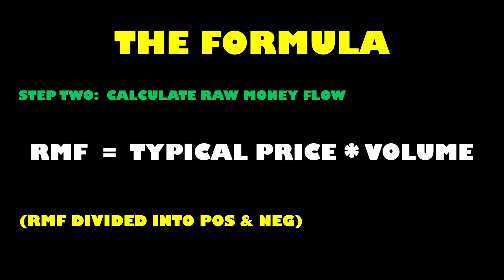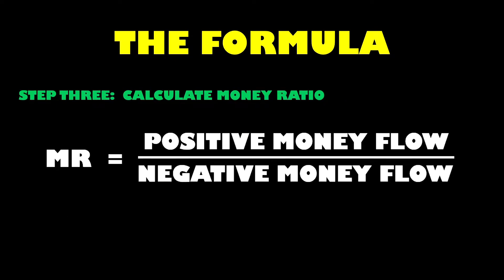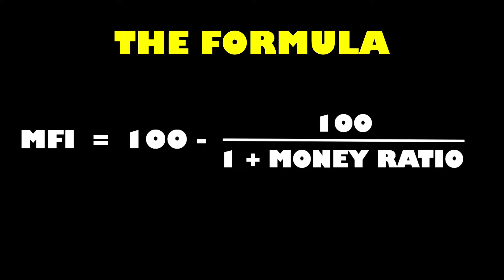If price stayed the same between two periods, that period can simply be ignored. By default, the period input for the MFI is 14. The individual values from all positive money flow periods from the last 14 periods are added together, and all negative money flow period values are added together as well. To finally get our money ratio, we divide the positive money flow figure by the negative money flow figure, then plug that into our original formula.